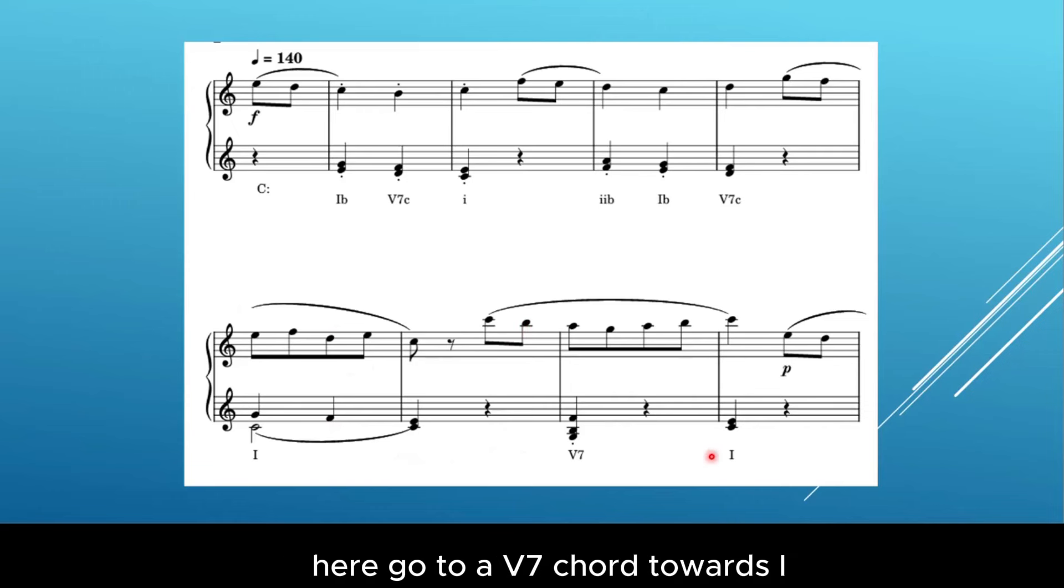Then the one chord continues with a B passing note here, go to a five-seven chord towards one, which is a perfect cadence. We can see this A is an accented passing note, la sol la ti do. Then after this accented passing note, the G and B are the chord tones. After we finish the first complete sentence, it will go back to the repetition of the first two notes, but this time use a softer dynamic.